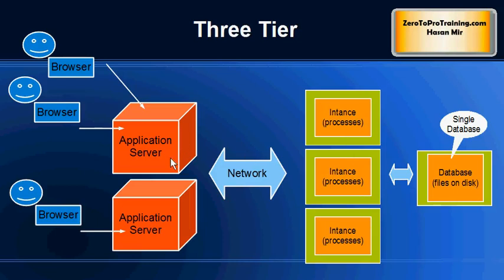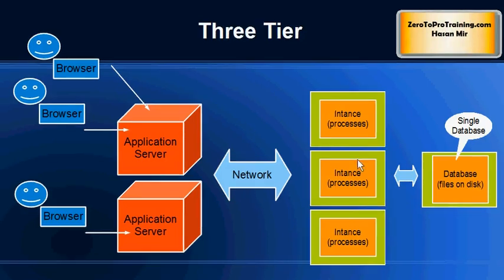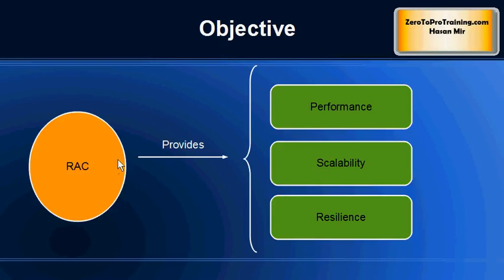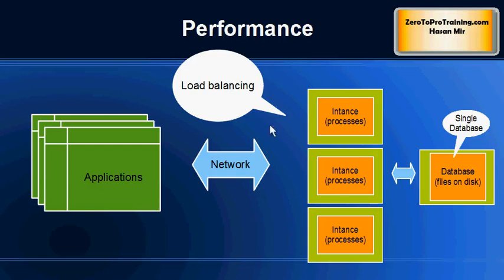In a RAC environment there are multiple machines running Oracle software, all connected to the same set of Oracle files. The application servers can talk to any of these machines. If your database management system is under heavy load — whether from one application server or multiple — you can add more instances to create scalability within the database management system. Coming back to the objectives of the RAC environment: the main purpose is to provide performance, scalability, and resilience.